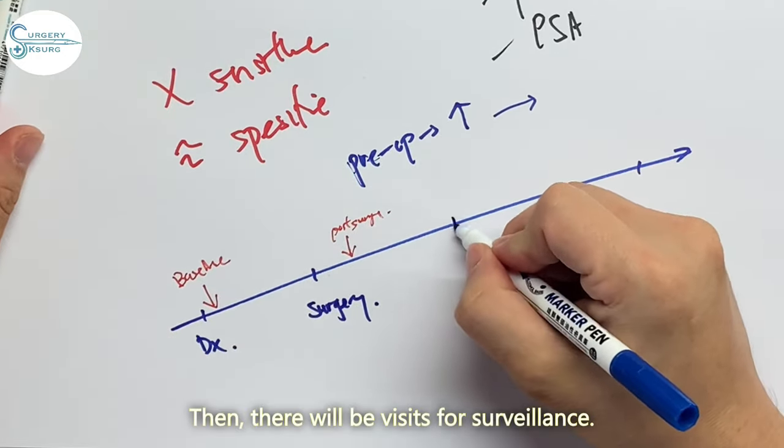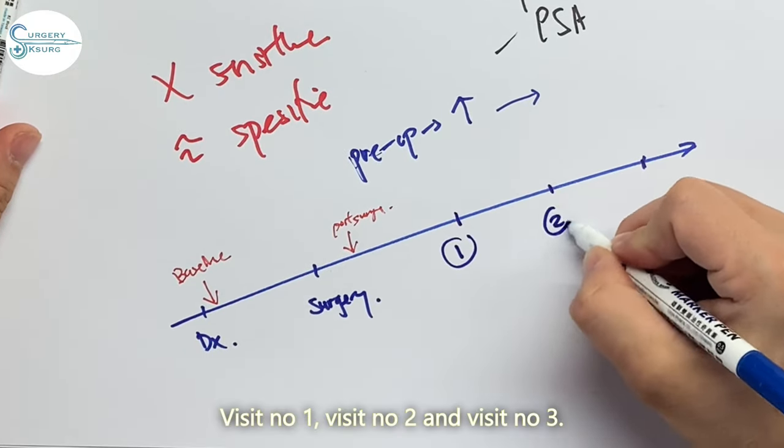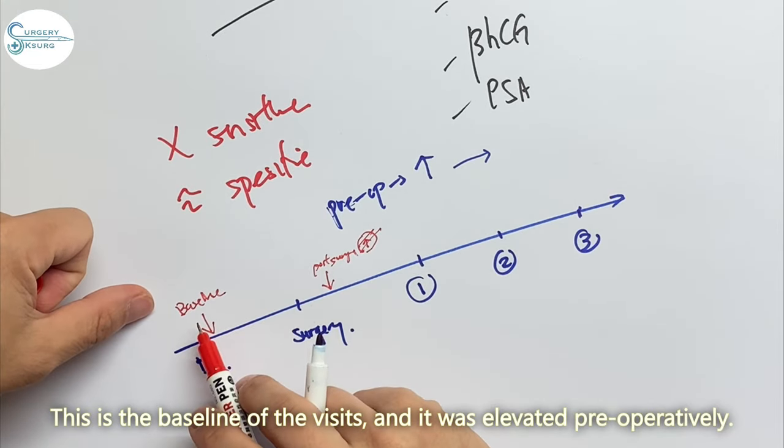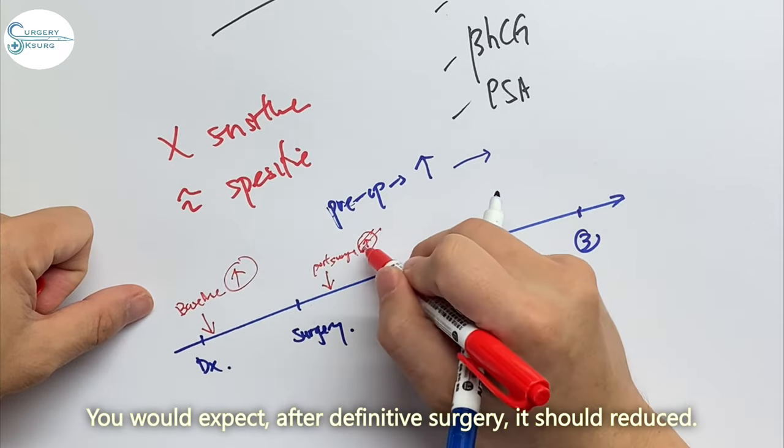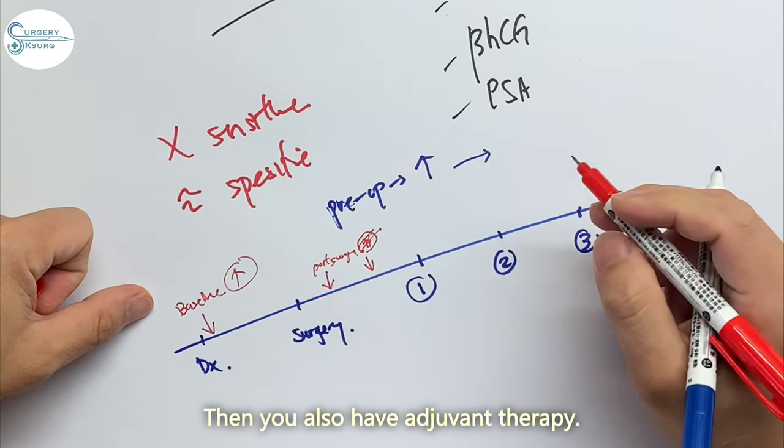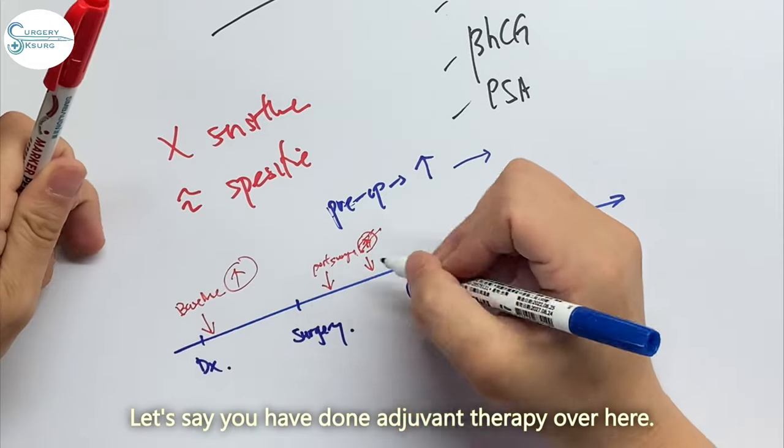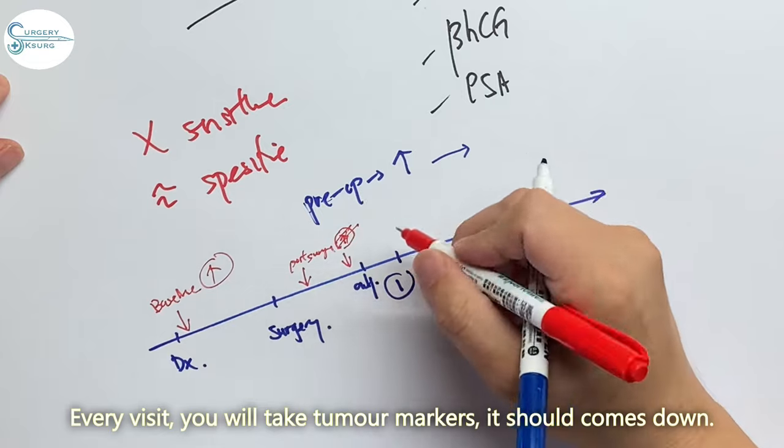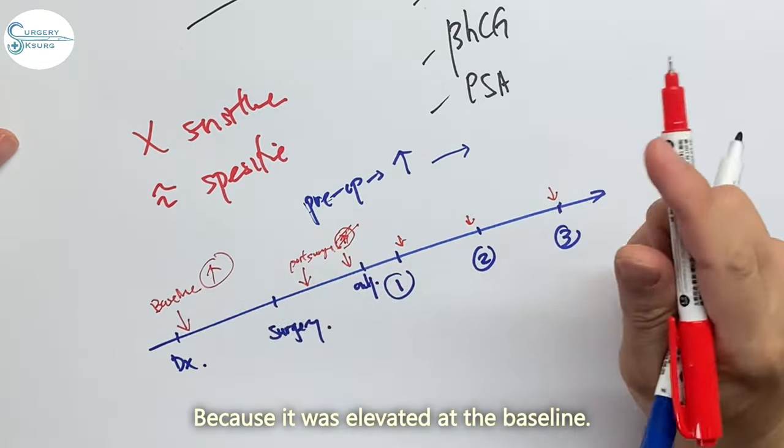So this is called baseline tumor marker and this is the post-surgery or post-op tumor marker. Then during every visit for surveillance, visit number one, visit number two, visit number three, this is the baseline of the visits. And it was elevated preoperatively. If you have to go back to the treatment, you will expect after the definitive surgery it should reduce. Then you also have adjuvant therapy. Let's say you've done adjuvant therapy over here. Every visit you will take the tumor marker, it should come down because it was elevated initially.